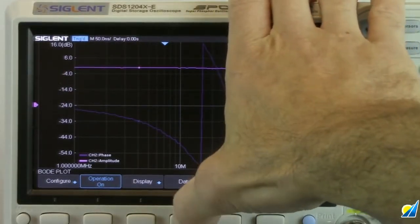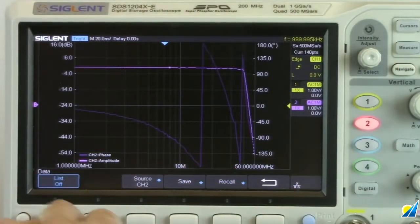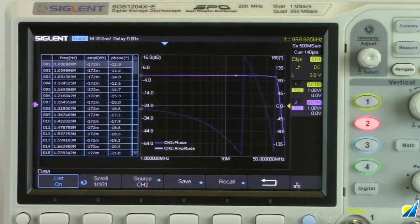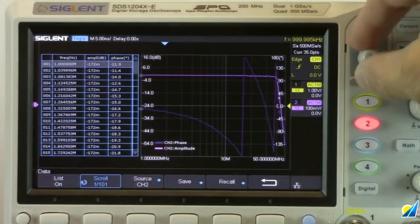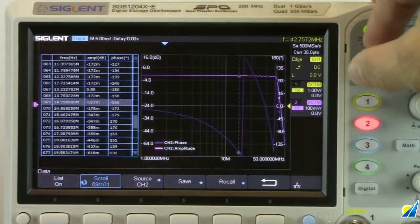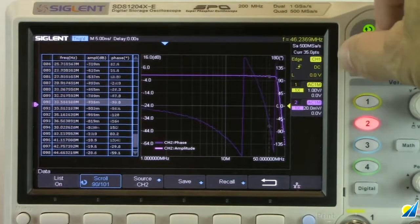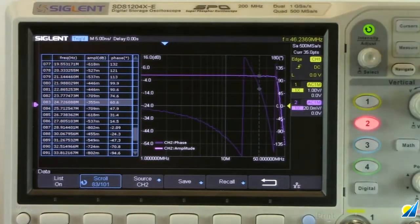So we can go over to data and go to list. The list is going to give us a full list of all of the values that we've collected. So it has the frequency, the amplitude, and the phase measurement at each one of those individual points. We can select scroll and then we can scroll through each individual line and value. And you can see that the point that we're looking at is indicated by these gray cursors in both the amplitude and the phase scale.